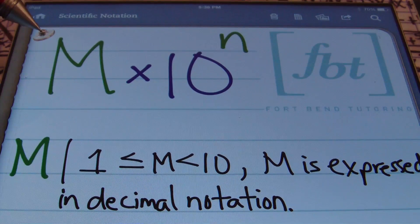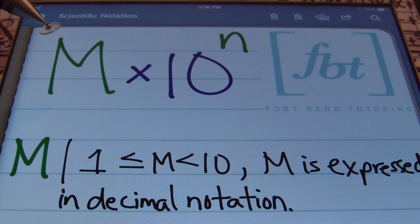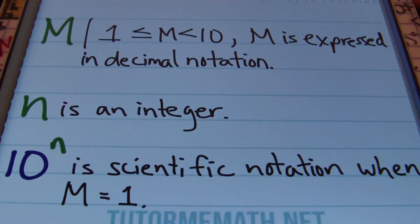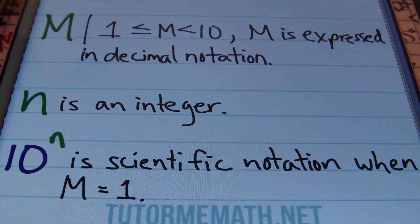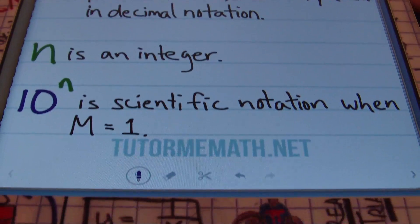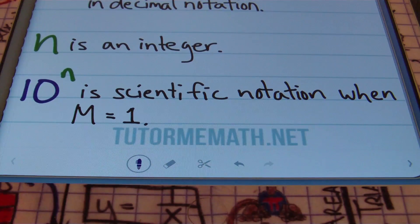This is the form of scientific notation. That capital M is going to be a number from 1 to 10, including 1 but not including 10, and you'll have 10 raised to an integer — an exponent whether negative or positive. The value of M will be expressed in decimal notation. The value of N is going to be an integer — no fractions, no decimals, just an exponent that may be negative or positive. And if you find your problem in the form of 10 to the Nth power, that is acceptable as scientific notation when M is equivalent to 1.